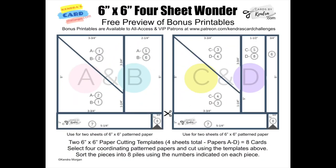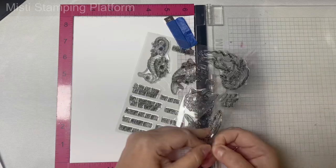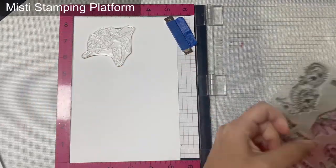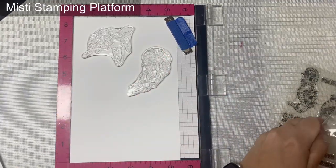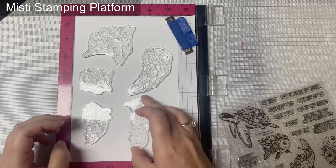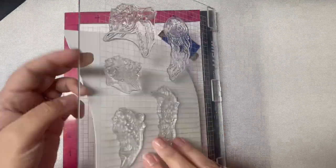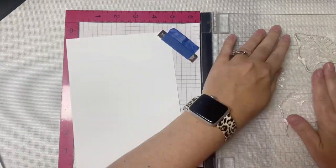I hope you'll take a moment to click on that subscribe button down below if you're not already a subscriber. For some of the cards I'm sharing today, I'm using this 6x6 4-sheet wonder PDF file that I'm offering to subscribers of my YouTube channel to download for free. I'm offering this as a preview to see what All Access and VIP patrons receive with the Kendra's Card Challenges bonus printables as part of their Patreon membership benefits. I'll talk more about this in a bit, but let me first show you how I typically tackle making a bunch of cards using the Crafty Courtyard kits.